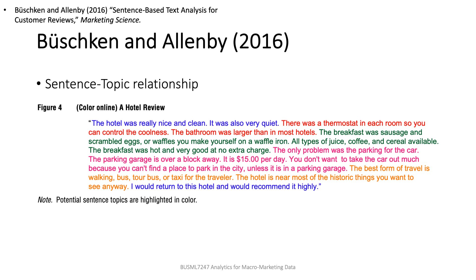This display shows an example of the sentence-topic relationship in a review. The color coding identifies different potential topics, which change across sentences but not within sentences. For example, sentences describing breakfast are coded green, and sentences describing general experience are coded blue.